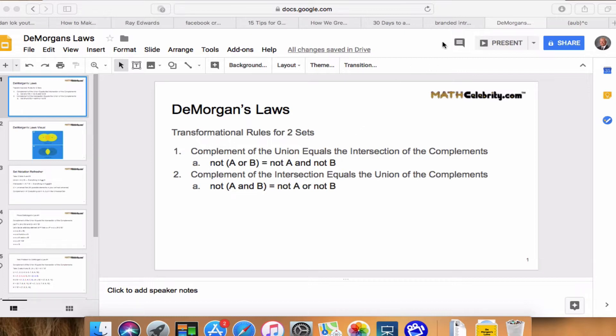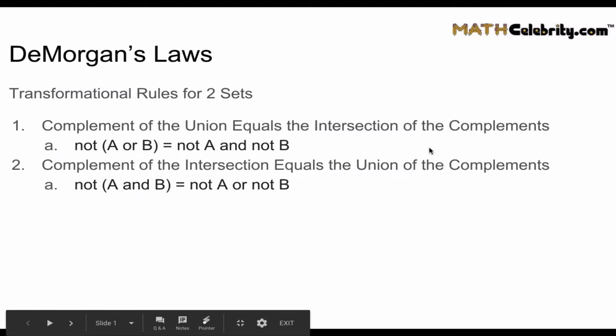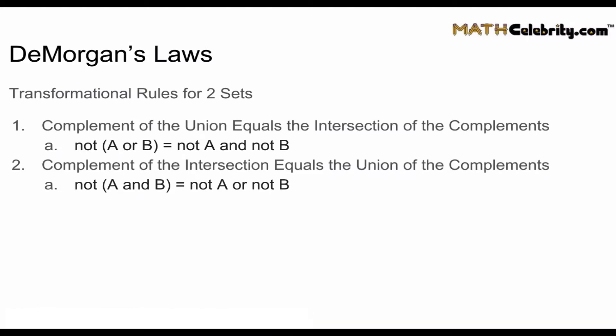DeMorgan's Laws help you simplify how to identify certain items in sets with complements, unions, and intersections. So with that said, let's go ahead and start the tutorial. DeMorgan's Laws are transformational rules for two sets, and there are two DeMorgan's Laws you need to learn.